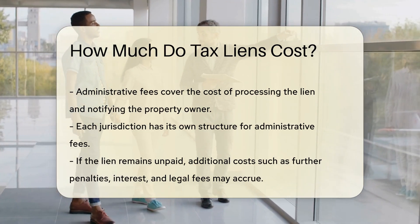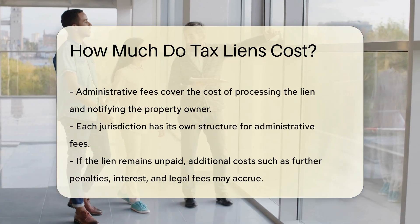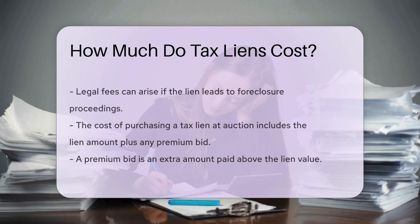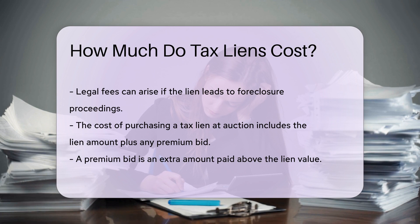The cost of purchasing a tax lien can also vary. Investors who buy tax liens at auction pay the amount of the lien plus any premium bid. This premium is an extra amount paid above the lien value.